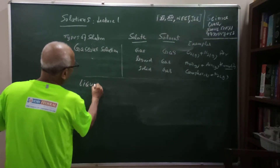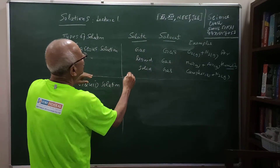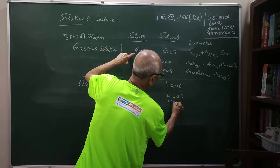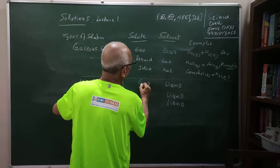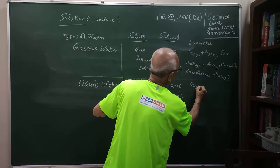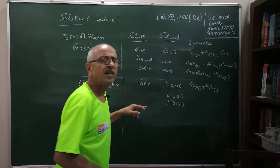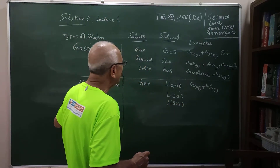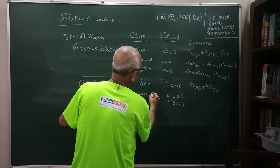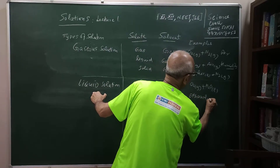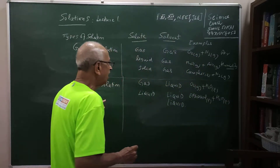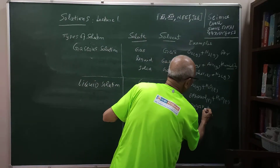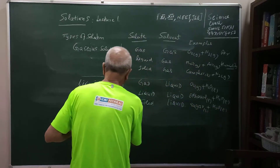If I take liquid solutions, the solvent will be liquid. I can put a gas in a liquid — for example, oxygen gas dissolved in liquid water. There is already some amount of oxygen present in water, which is a gas-in-liquid solution. You can also mix liquid in liquid, and you can put a solid in a liquid — for example, sugar dissolved in water. These are all liquid solutions.